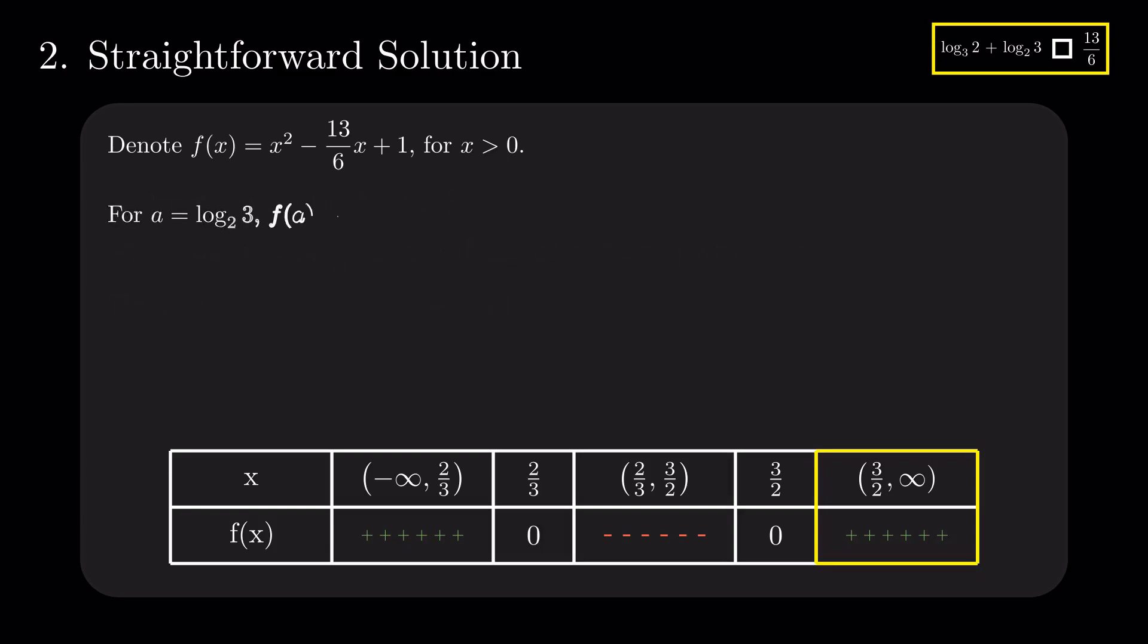In conclusion, for a equals log base 2 of 3, f of a is strictly greater than 0. And given the series of equivalent relations from the beginning, this implies that log base 2 of 3 plus log base 3 of 2 is greater than 13 divided by 6.